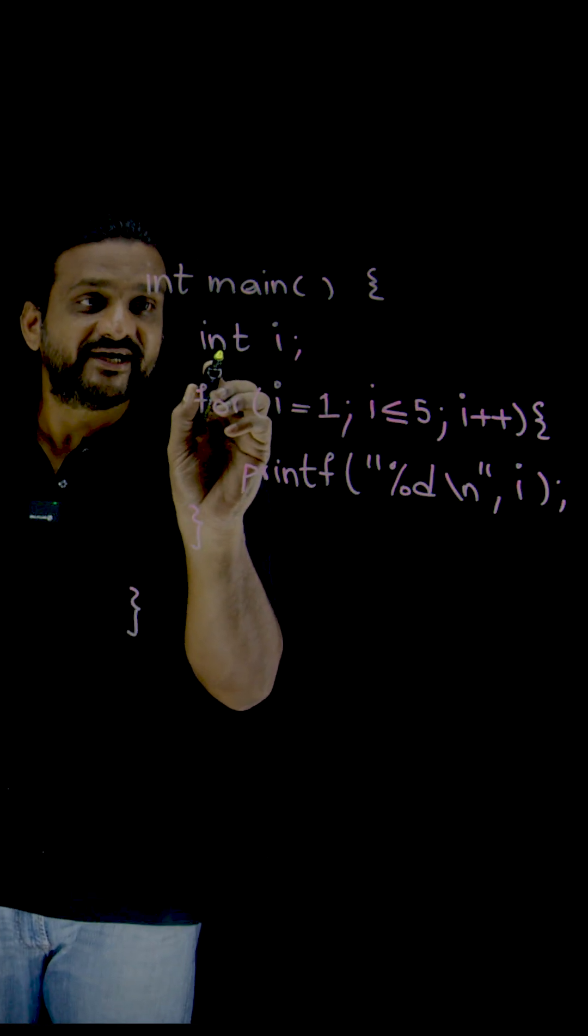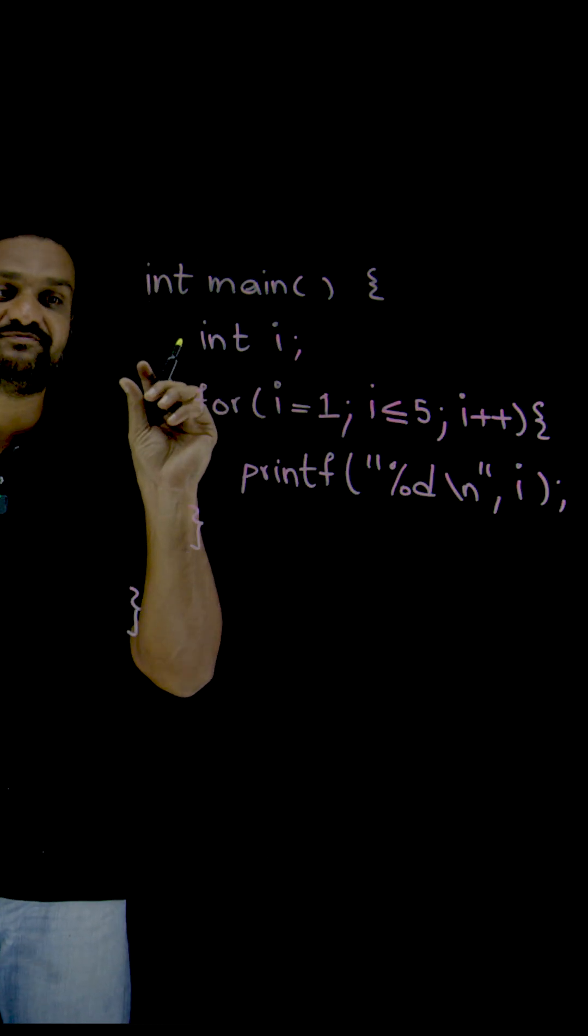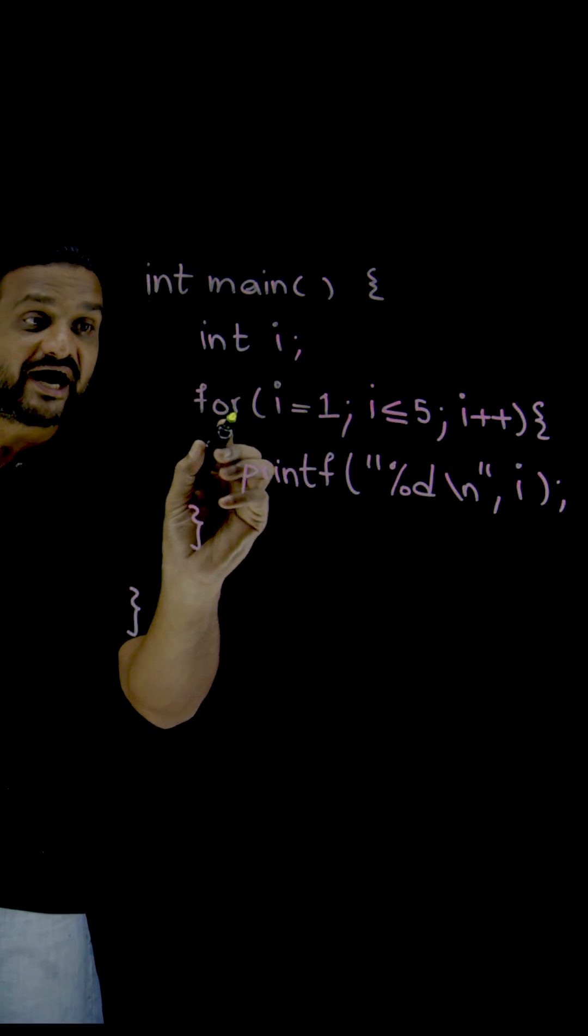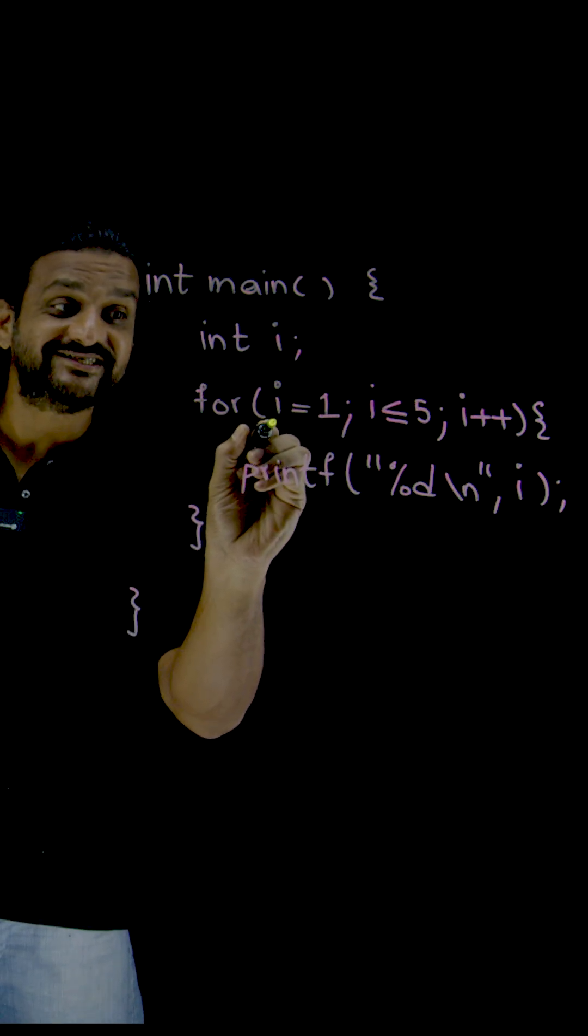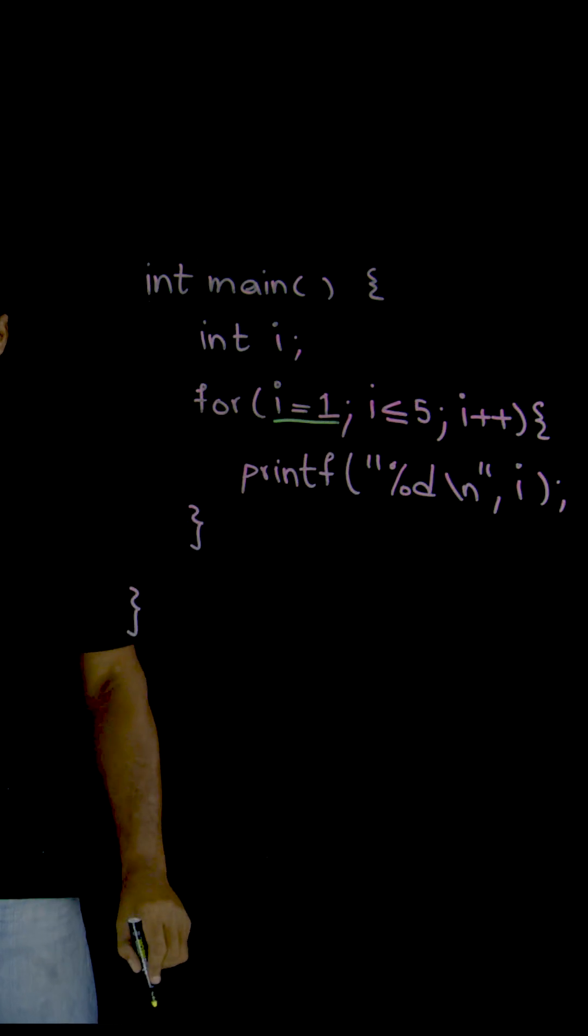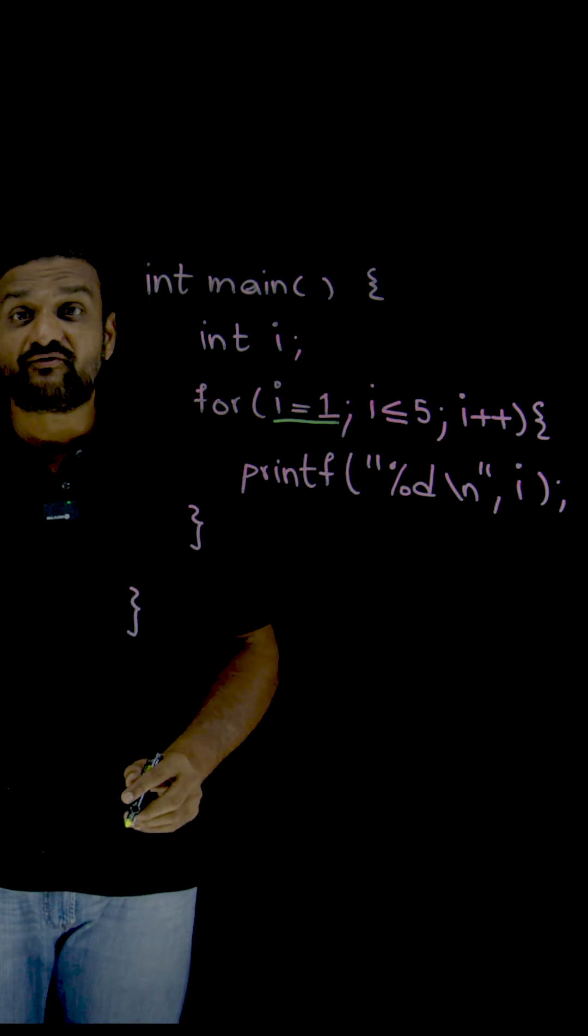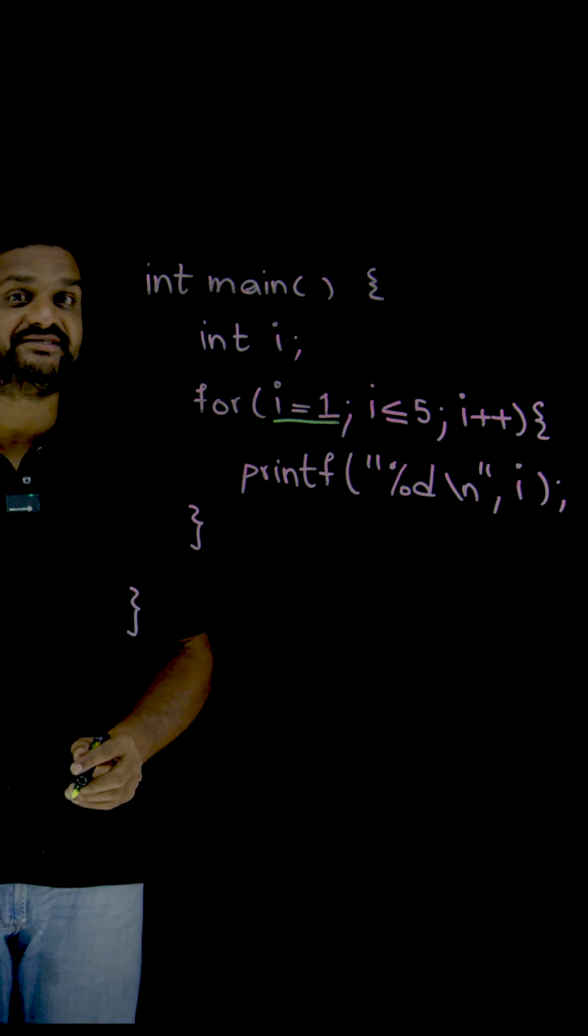Let's get started. So here int i, a variable i has been declared. For i equals 1, this is where the initialization is done. This is where the value of i is getting initialized.